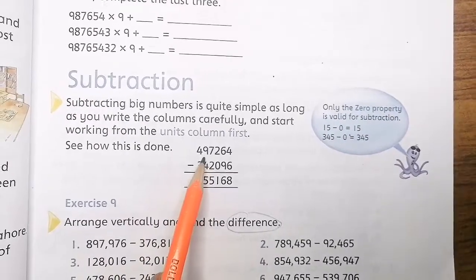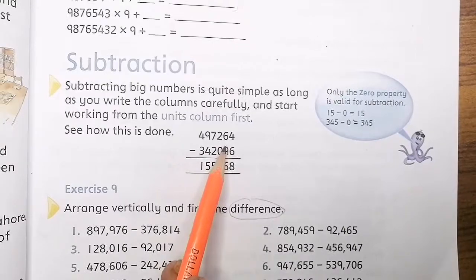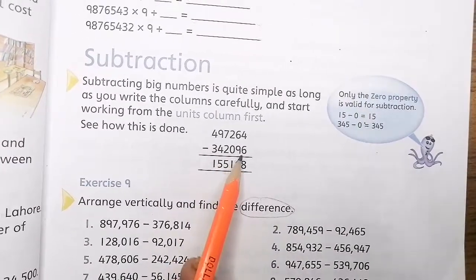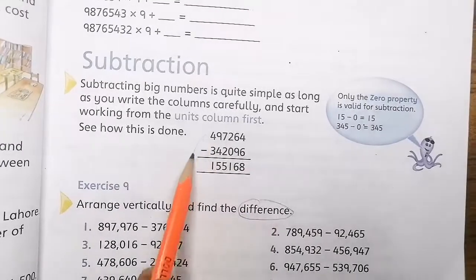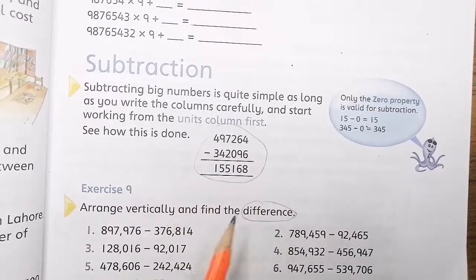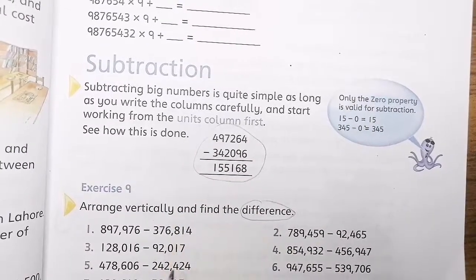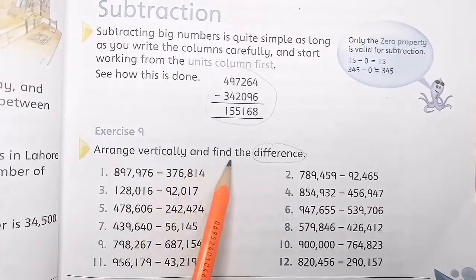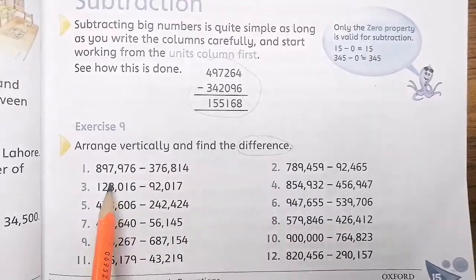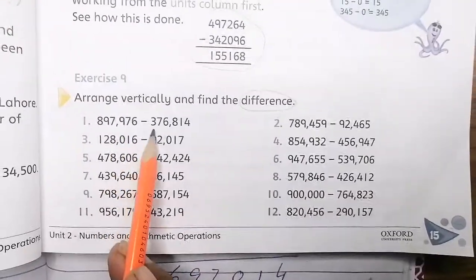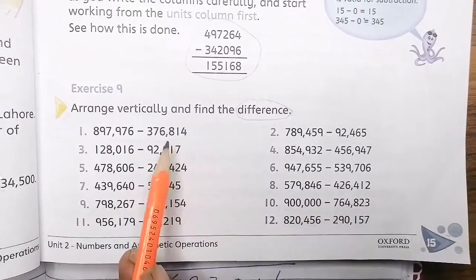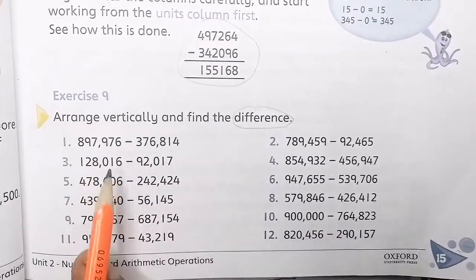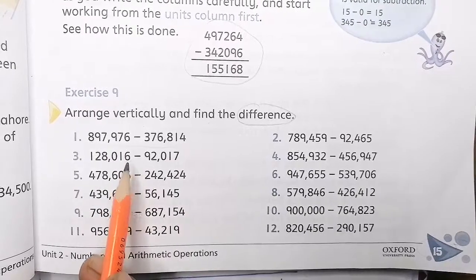For example, 497246264 minus 342096. Exercise 9 is about arranging numbers vertically and finding the difference. The questions are given in horizontal form, so we have to write them vertically and then subtract.